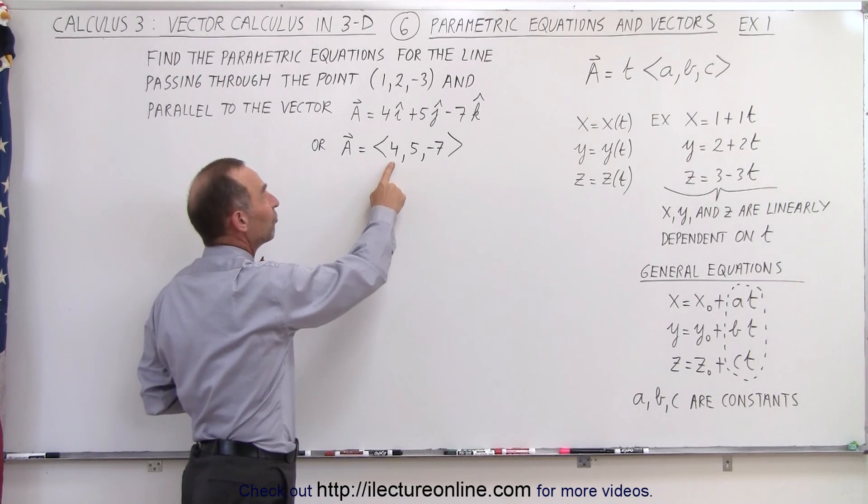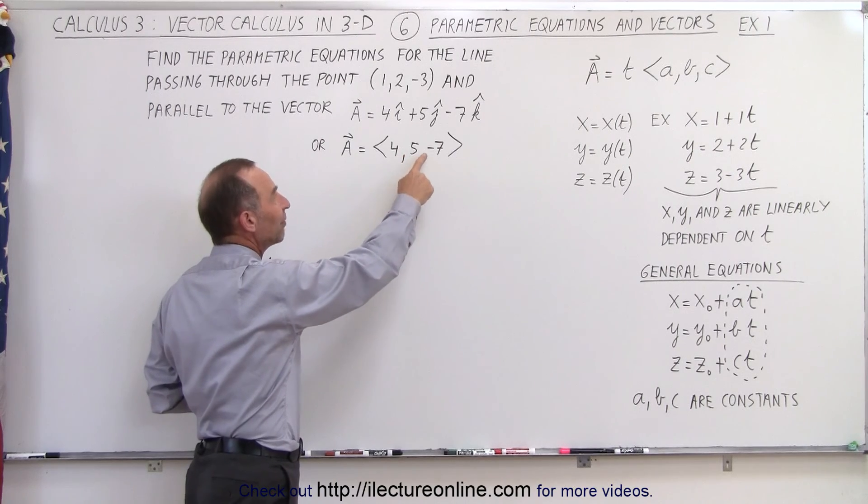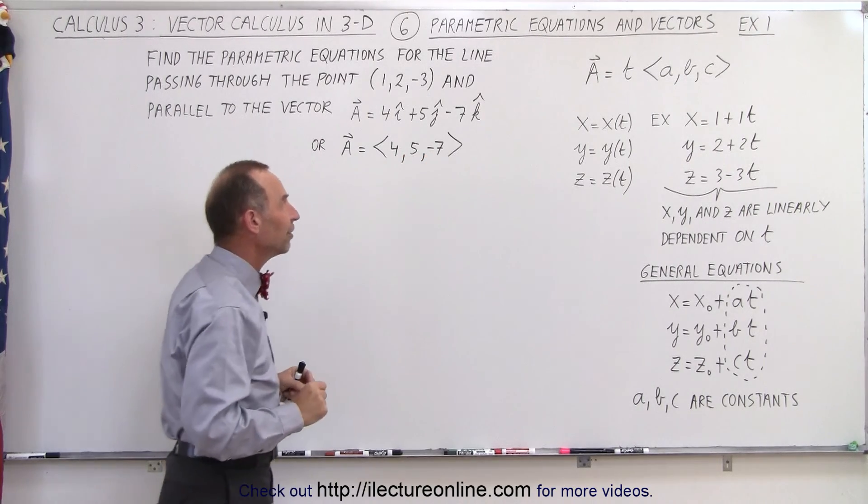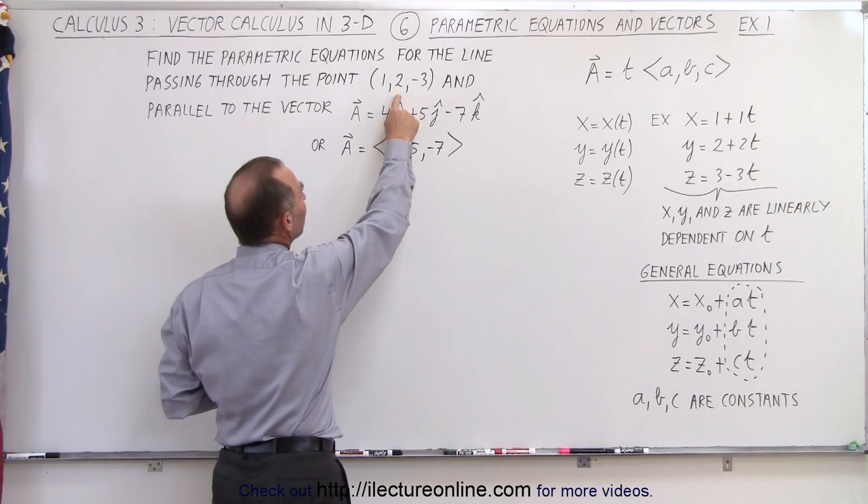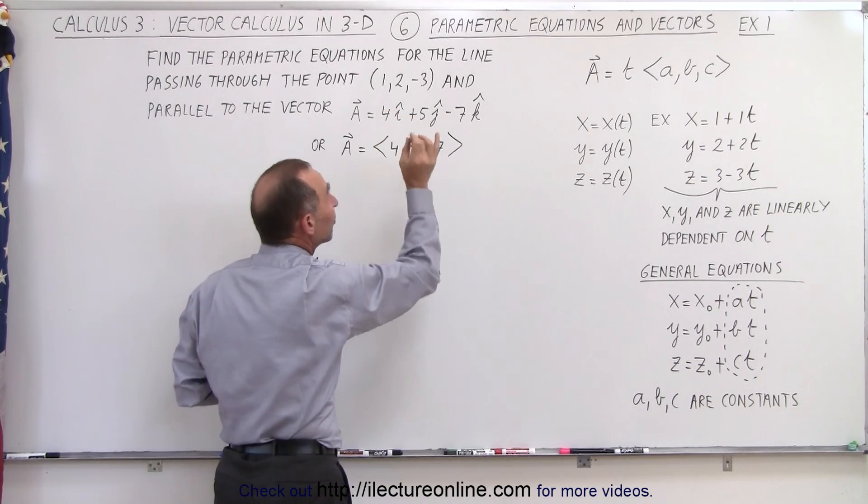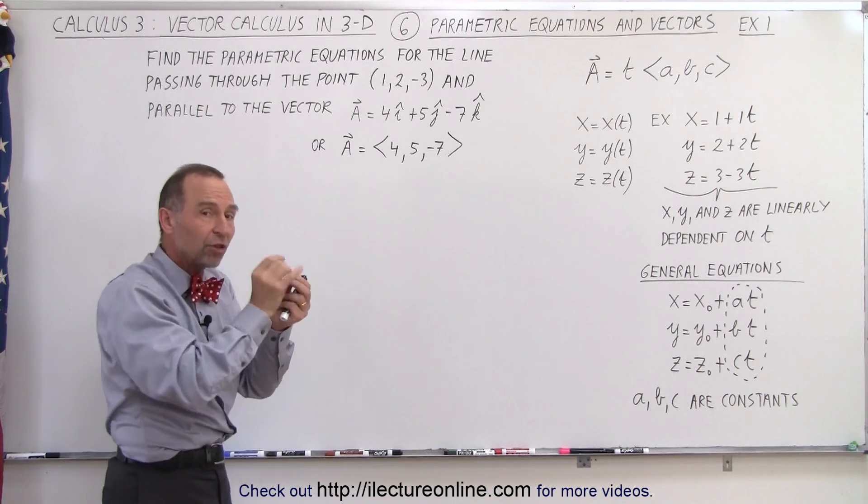So when x changes by 4, y will change by 5, and z will change by -7. In addition to that, we're given some point that the line passes through. That can be defined as some initial point, some starting point.